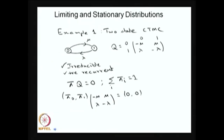I am going to give one simple example of finding the limiting and stationary distribution. Take the two-state CTMC. We know the Q matrix, and you can verify this is irreducible and positive recurrent since it is a finite state model and both states are communicating with each other. Therefore, it is an irreducible positive recurrent model.